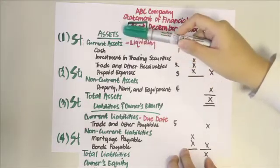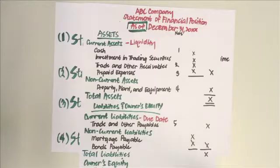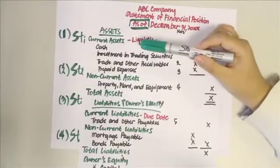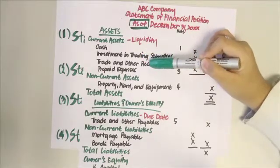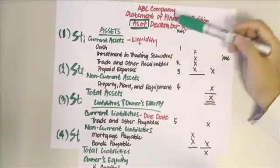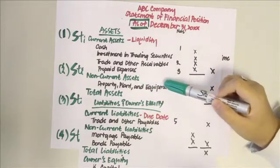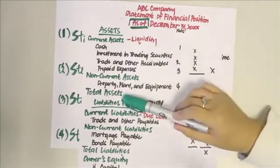Under the assets heading, you have your current assets, which are always arranged according to liquidity — meaning you organize them by how easily they can be turned into cash. The order is always: cash, then investments in trading securities, then trade and other receivables, then prepaid expenses. After that, you list your non-current assets, which for basic accounting students would only include property, plant and equipment, and then you get your total assets.